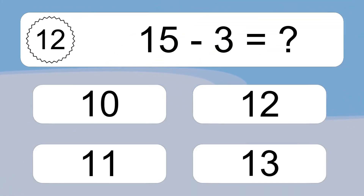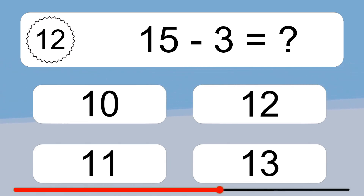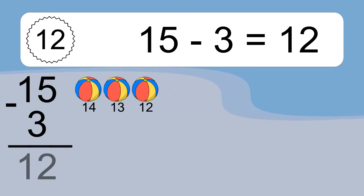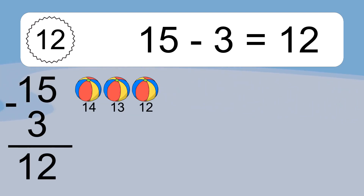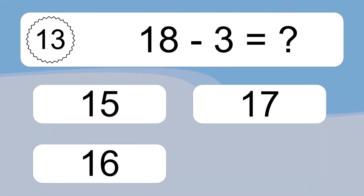Fifteen minus three equals what? Fifteen minus three equals twelve. Let's count it: 14, 13, 12.